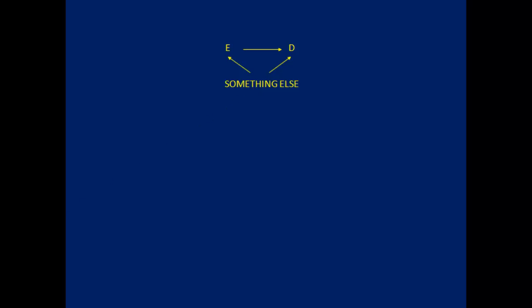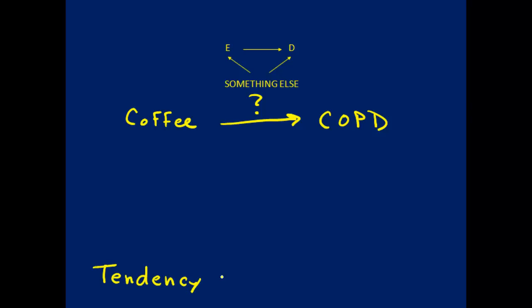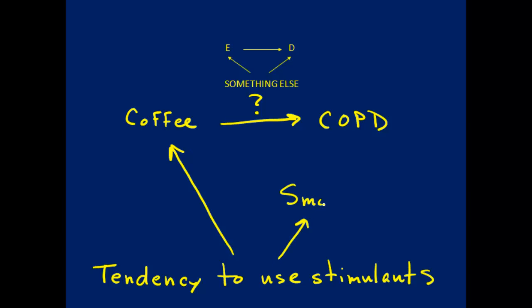Let's use an example. What if we wanted to test whether drinking coffee was a cause of COPD? We have an arrow from coffee to COPD. There's also a confounding variable here: the tendency to use stimulants. This tendency leads individuals not only to drink more coffee, but also to be more likely to smoke, which in turn increases the risk of COPD.